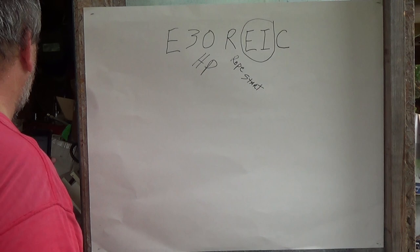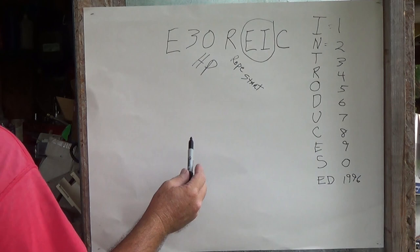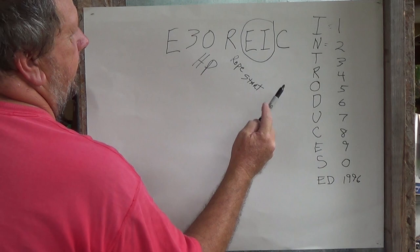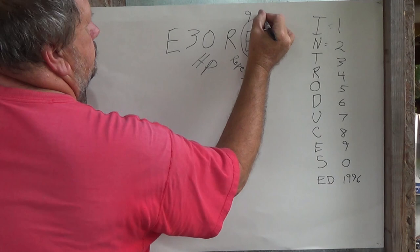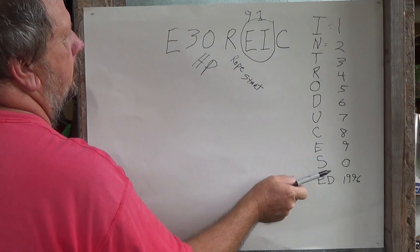That tells you the year, and the way you do this is they spell out INTRODUCES. So if you look this up, the EI - the E is the nine and the I is one, so this motor here is a 1991.